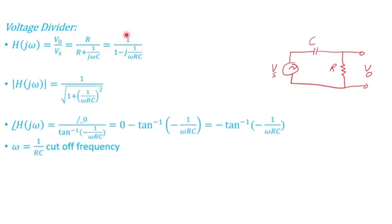Taking the magnitude, the numerator is 1, and the denominator is square root of 1 plus the entire quantity squared. I do the same thing for the angle, and the cutoff frequency in this case is ω = 1/RC.